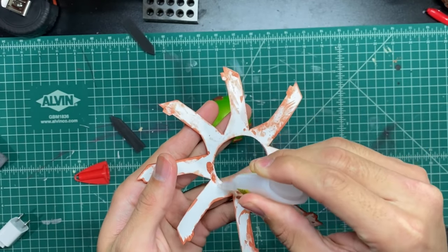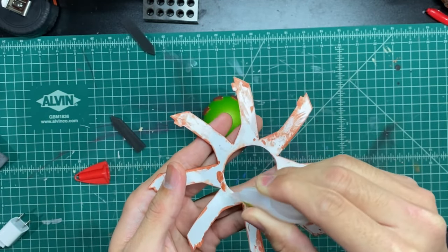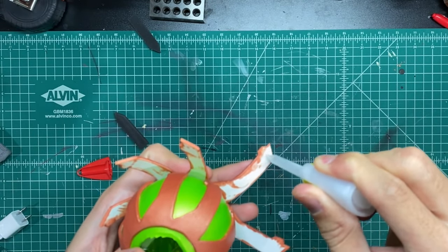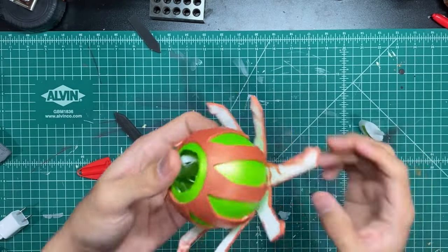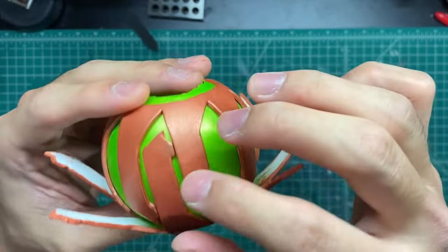Now we're going to repeat the exact same process onto the other piece of the template. Here you can see that these legs are just fitting in between the other legs.